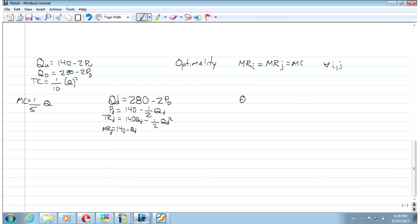Let's do the same thing for Us Weekly. And then total revenue from Us Weekly is 70 Q_U minus 1 half Q_U squared. So now my marginal cost is 1 over 5 Q. But Q is composed of Q_U and Q_D.